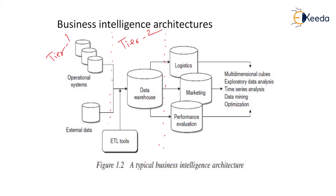Now let's go through each tier one by one. Tier 1 is the operational system with external data — we can call it the data source. This data source takes data and requirements, gathering from heterogeneous data systems. It can be the internet, different books, newspapers, articles, blogs, etc. The data extracted can be heterogeneous in type, and operational sources may also include unstructured data such as emails or various file types.